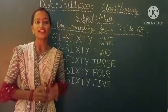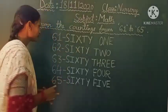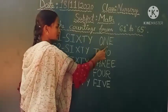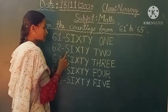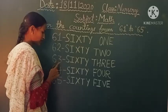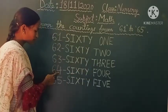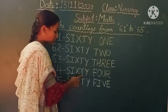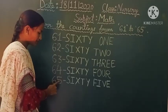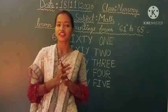So, we have read these with spelling. Now let's read them directly. Okay. 61. 61. 62. 62. 63. 63. 64. 64. 65. 65. So students, all reading is done.